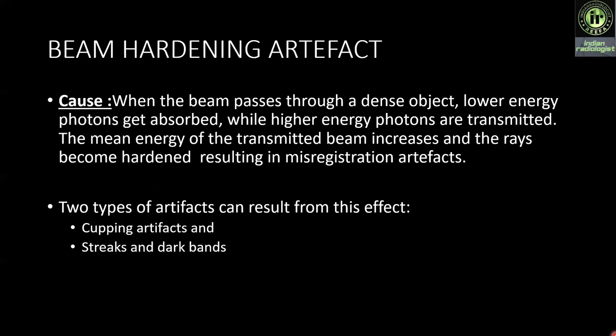First is beam hardening artifacts. Cause: when the beam passes through a dense object, lower energy photons get absorbed while higher energy photons are transmitted. The mean energy of the transmitted beam increases and the rays become hardened, resulting in misregistration. Two types of artifacts can result: cupping artifacts and streaks.